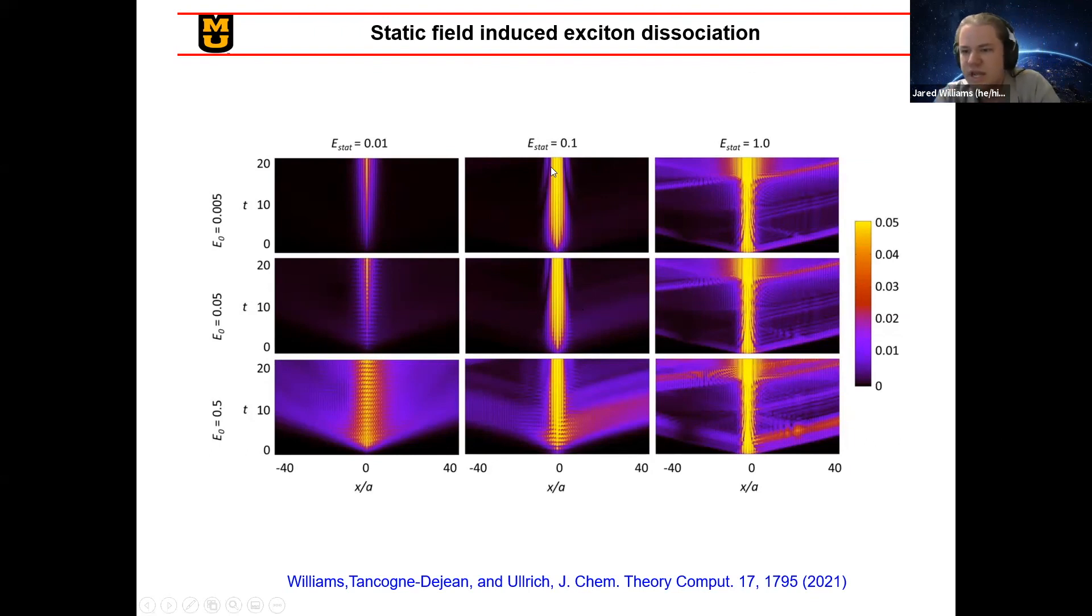However, you also see that as the static electric field increases in strength, we also see this smearing out of the wave function to one side, and this is essentially the electric field attracting the two differently charged carriers in different directions, trying to pull the excitons apart. So we actually have both an exciton population increasing effect as well as an exciton dissociation effect happening at the same time.